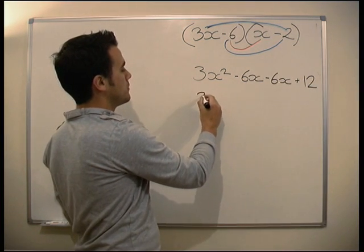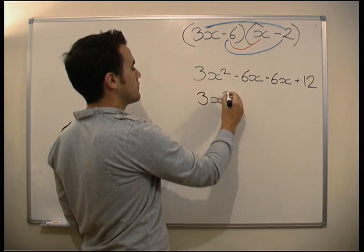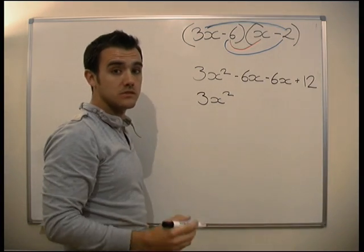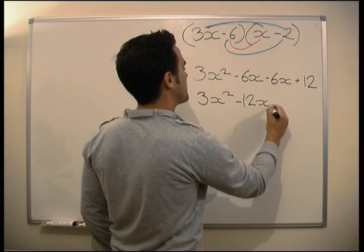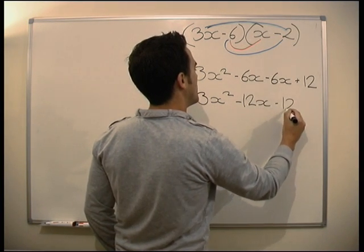So the answer from this one is 3x² minus 6x minus 6x plus 12, which simplifies to 3x² minus 12x plus 12.